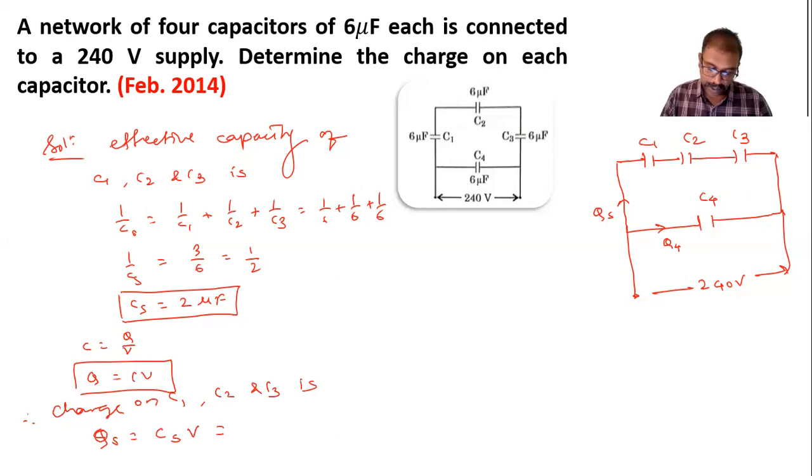We have to write in farads only, so 2 × 10^-6 farads multiplied by V. V is 240, so 240 × 2, we are getting 480.